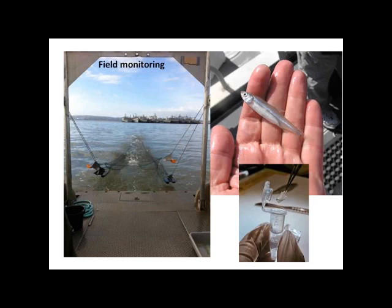An alternative is to capture organisms directly from the field, bring them to the lab, and conduct biochemical and molecular assays to assess their health condition. Suite A at UC Davis is currently conducting a number of assessments on delta smelt.